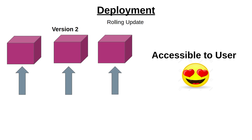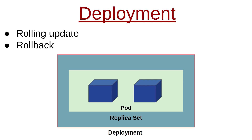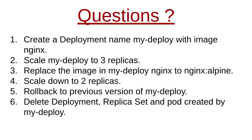The second thing is that if we want to roll back the application from version 2 to version 1, we can also roll back with Deployment. So when we create a Deployment, there are 3 things created: Deployment, ReplicaSet, and Pod. We are going to be practical to see how we create Deployment and all the related commands, and we will do some questions with Deployment.